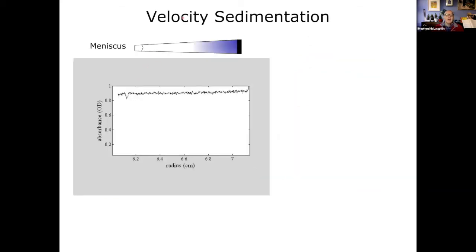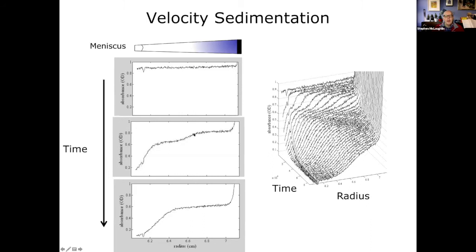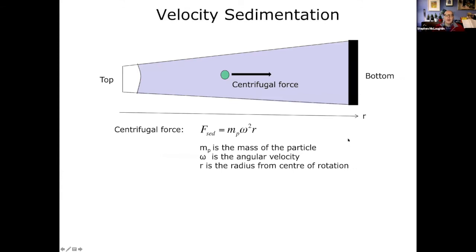In sedimentation velocity, here's the meniscus and the bottom of the cell. As we start scanning across at different time points, the profile moves toward the bottom and we can see different species sedimenting at different rates. Plotting absorbance against radius over time shows the kind of changes that are actually happening, and we need to analyze this to get an idea of the mass of the samples.